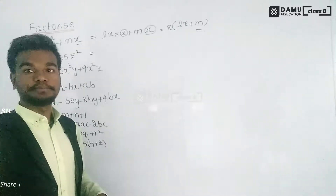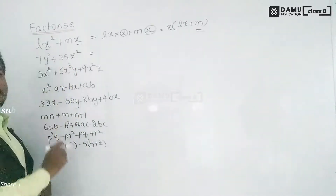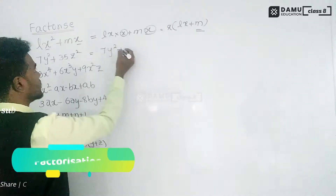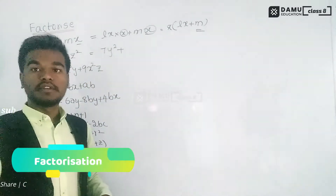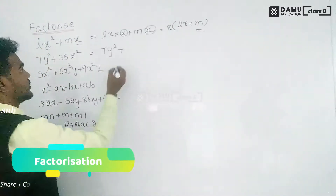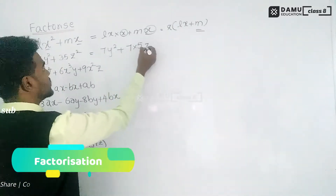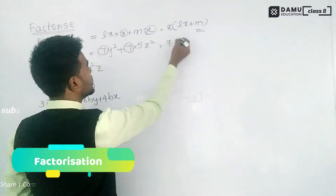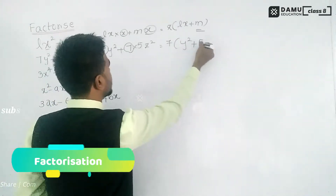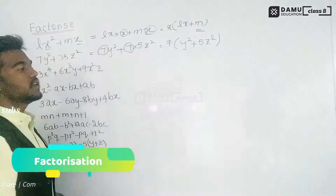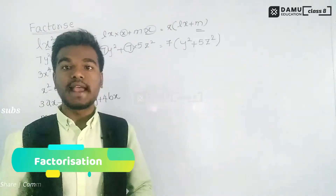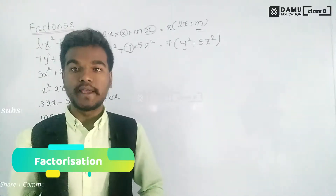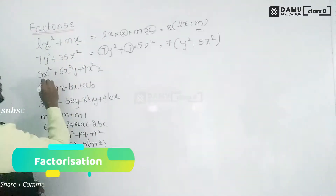The second question is 7y² + 35z². We write 7y² as it is, and we can write 35 as 7 × 5. So 7 is common in both terms. Taking 7 outside, we get 7(y² + 5z²). That is the factorization — writing it in a × b format, as a product of two expressions.